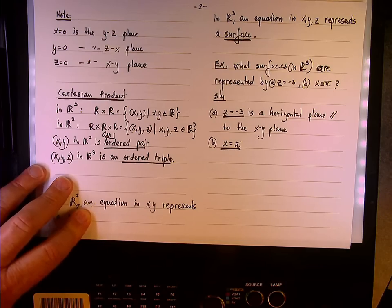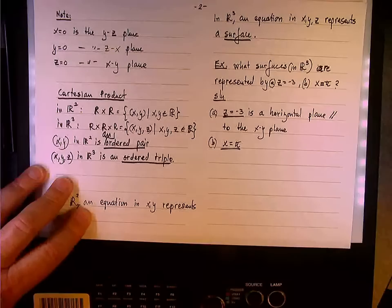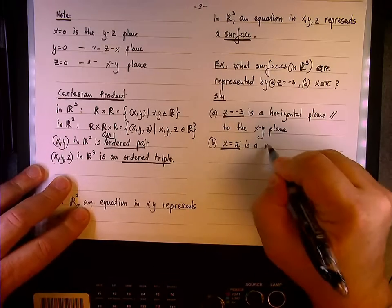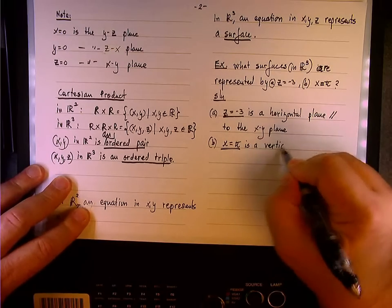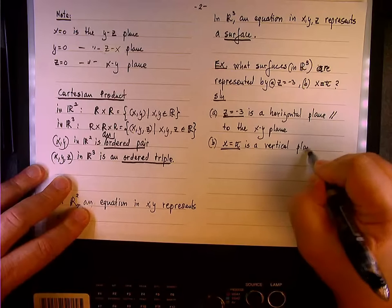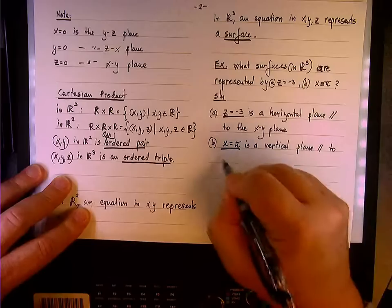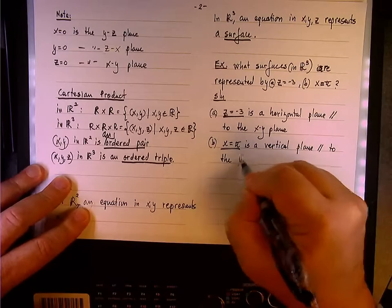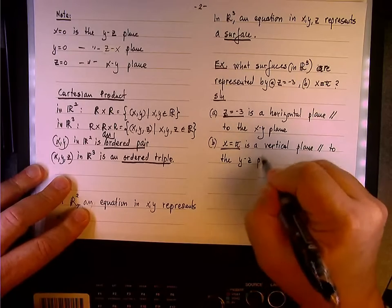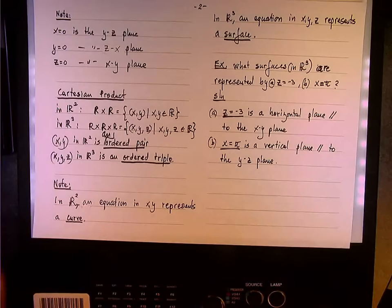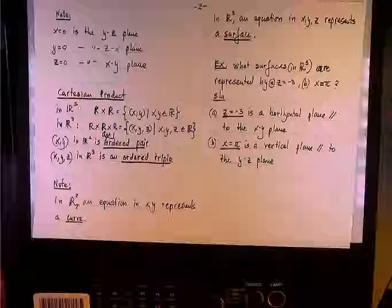X equals constant, Y equals constant, make it both a vertical plane. X equals constant, so it's parallel to the what? The yz plane. The yz plane. All right.